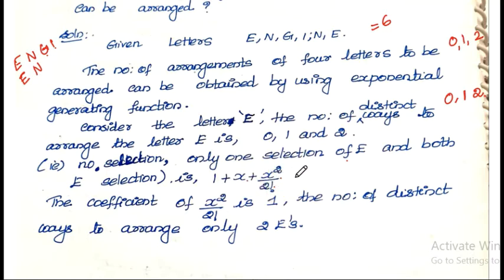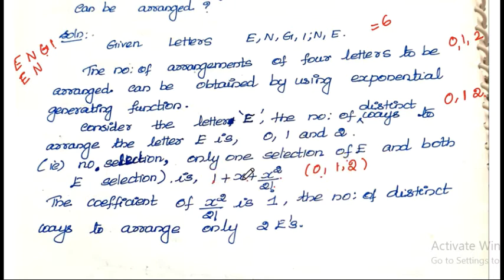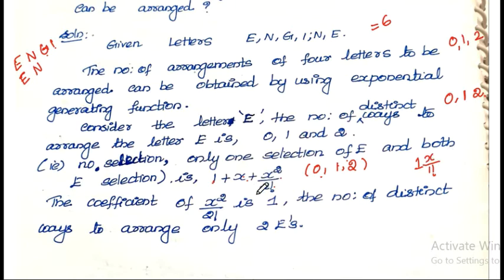That is: 1 plus x plus x-squared divided by 2 factorial. The coefficients are based on the number of selections. Zero selections means x raised to 0, which is 1. One variable selection gives x by 1 factorial as the coefficient. Two digit selection gives x-squared by 2 factorial as the coefficient.